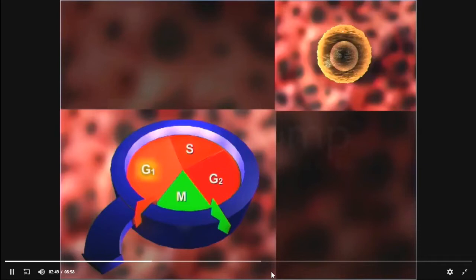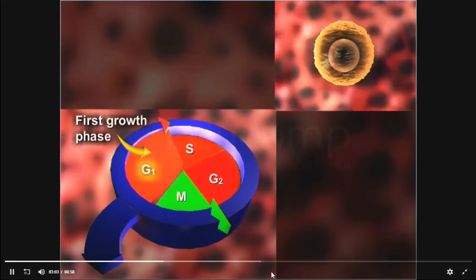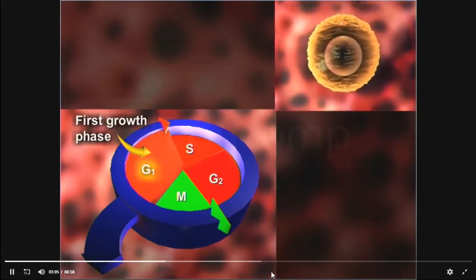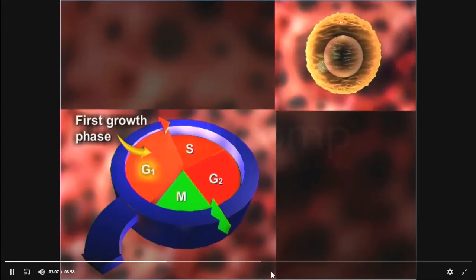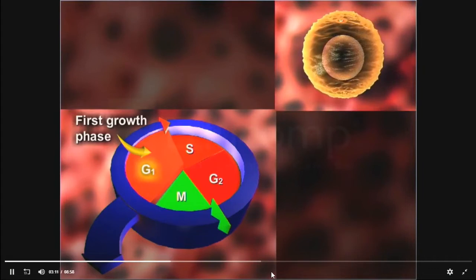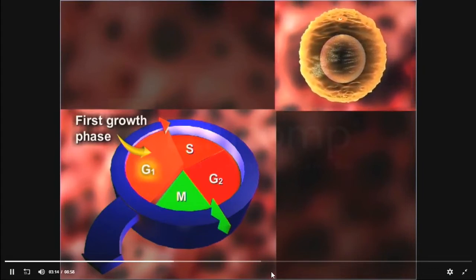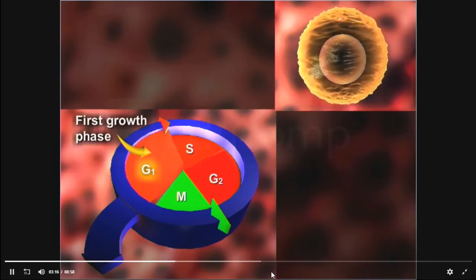A cell enters the first growth phase G1 when it senses growth factors. During the G1 phase, new protein synthesis occurs and the cell enlarges as all cellular components are duplicated. After a few hours in the G1 phase, the cell crosses the point of no return or commitment point and gets committed to divide.